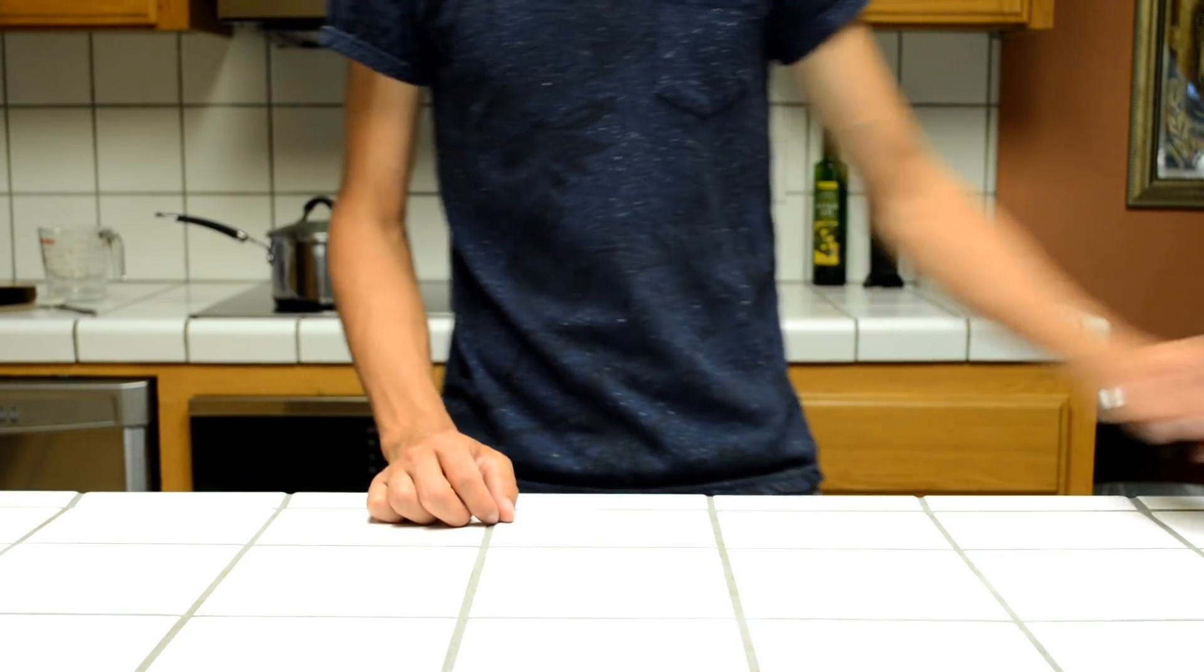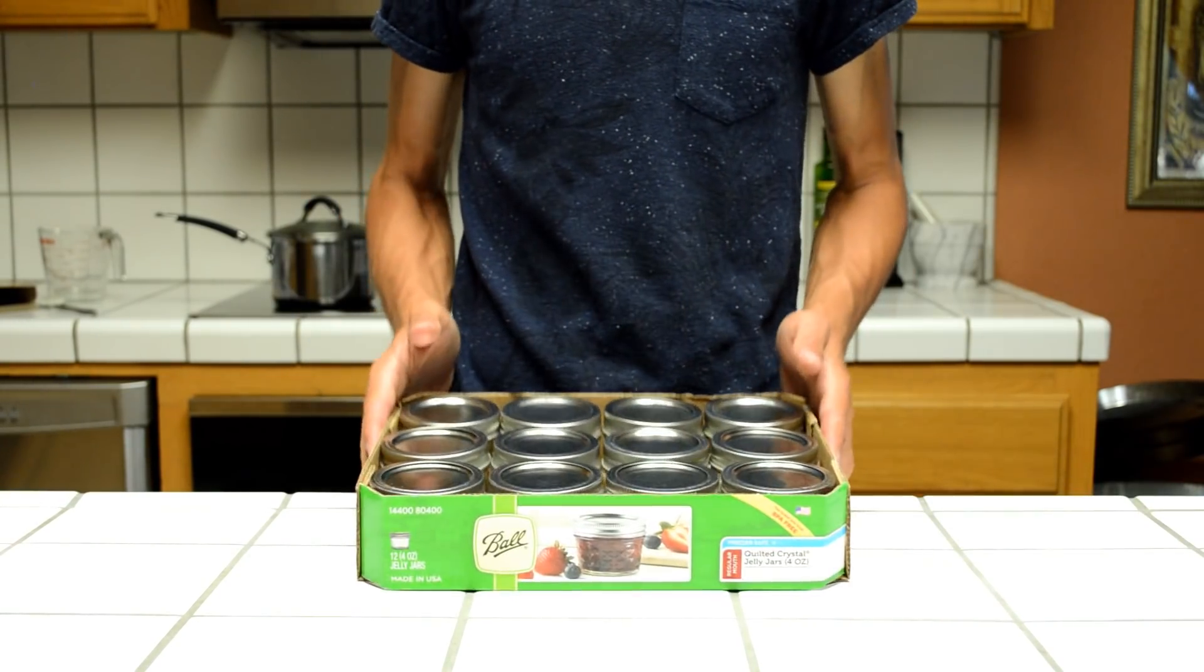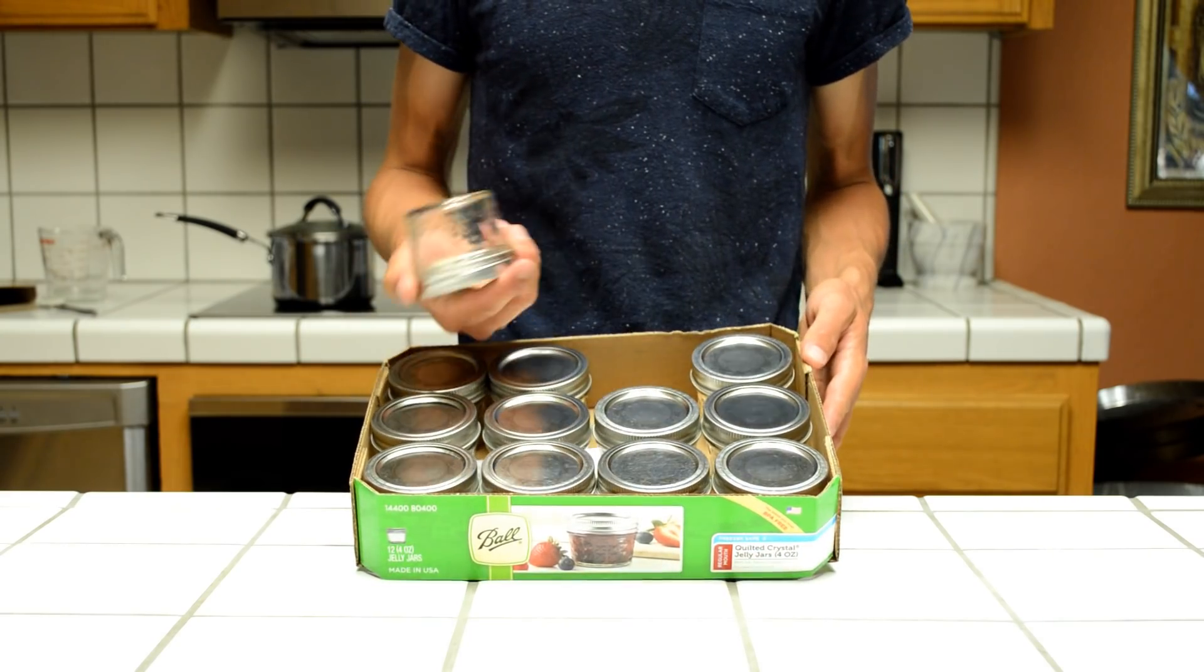The first thing we'll need are some DIY petri dishes. These four ounce mason jars work perfectly and allow for easy long-term storage.